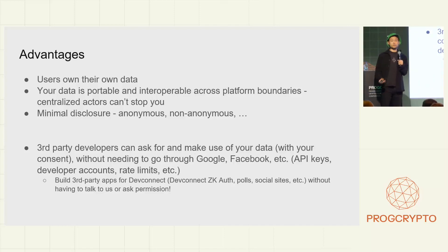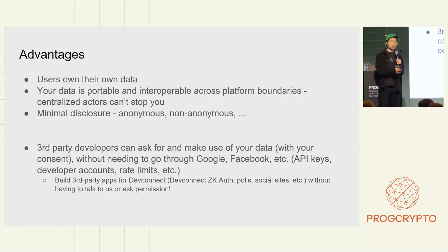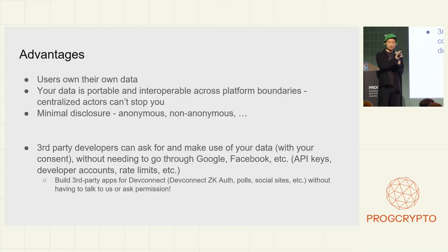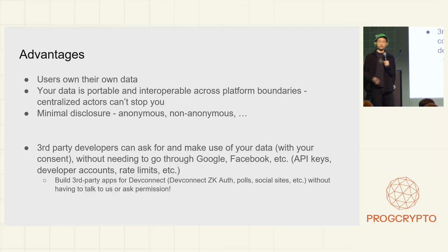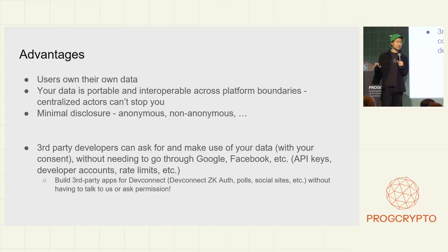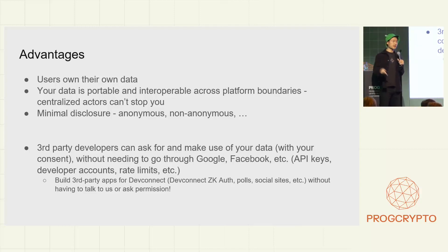Third-party developers who want to build something tapping into this rich, composable data ecosystem can ask for and make use of data held by users and services all over the world, without needing to go to Google or Facebook to get an API key or developer account approval. You've possibly interacted with third-party applications built for DevConnect — the ZK-powered Telegram group, the anonymous chat, anonymous voting, and various other functionalities. These were built permissionlessly. Someone who wanted to build a faucet for DevConnect attendees could simply build a thing that pops open ZooPass, asks users to make a cryptographic proof of attendance, and consume that response — no DevConnect server or ZooPass server needed. It's a purely client-side, user-facing interaction.